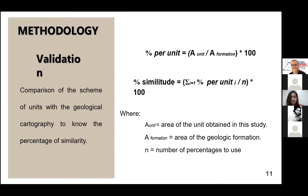The validation process was carried out by comparing the lithological units recognized in this work with the existing cartography of the area, to note the percentage of similarity. The percentage is calculated as an average of the percentage of area coincidence. The area coincidence percentage is calculated between the units obtained by our work and the formations of the base cartography.